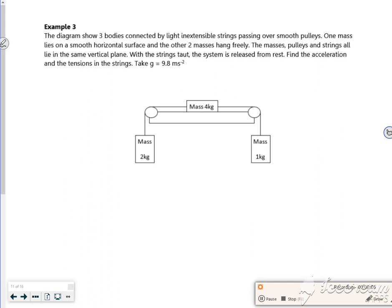So Diagram 3 shows three bodies connected by light inextensible strings passing over smooth pulleys. Each string has its own tension. One mass lies on a smooth horizontal surface and the other two masses hang freely. The masses, pulleys and strings are all lying on the same vertical plane, strings are taut.